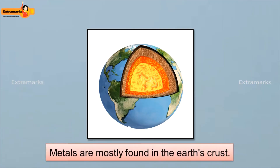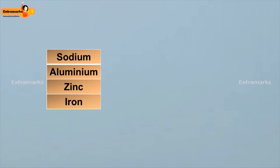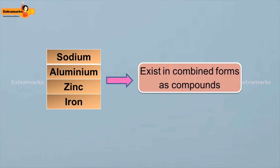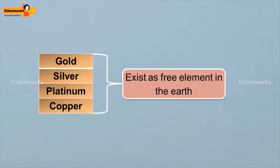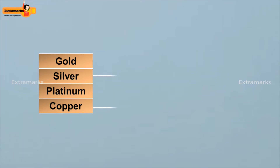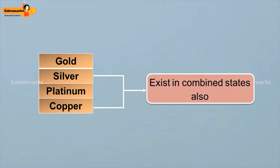Metals are mostly found in the earth's crust. Reactive metals such as sodium, aluminium, zinc, and iron exist in combined forms as compounds. Less reactive metals like gold, silver, platinum, and copper exist as free elements in the earth. However, copper and silver also exist in combined states.